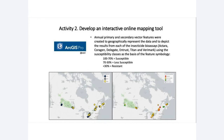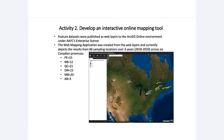Once the database was developed, we transferred it into ArcGIS Pro, another ESRI product. The data was incorporated into spatial locations using latitude and longitude to geographically represent the data. We produced annual primary and secondary vector features to represent the data and depict results from each of the six insecticide bioassay products. We used the susceptibility classes as the basis of feature symbology: susceptible was 100–70% mortality, less susceptible was 70–30% mortality, and resistant was less than 30% mortality. The web mapping application currently depicts results from 86 sampling locations over three years from 2018 to 2020 across six Canadian provinces — PEI with 15 sites, New Brunswick 12, Quebec 21, Ontario 15, Manitoba 20, and Alberta 3.